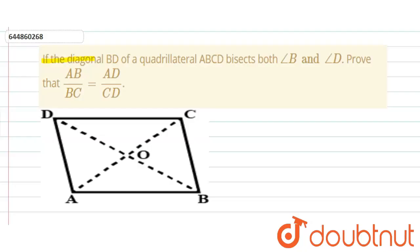The question is if the diagonal BD of a quadrilateral ABCD bisects both angle B and angle D, prove that AB upon BC is equal to AD upon CD.